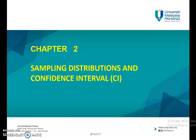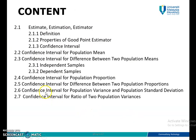Assalamualaikum warahmatullahi wabarakatuh and good day. Today we'll continue the lecture for Chapter 2, Sampling Distribution and Confidence Interval. In the previous class, you learned to find the Confidence Interval for Population 1 Proportion, which is Section 2.4. Today we'll cover 2.5, which is to calculate or to find the Confidence Interval for the Difference Between 2 Population Proportions — so instead of 1 population proportion or 1 pi, now you have 2 pi.